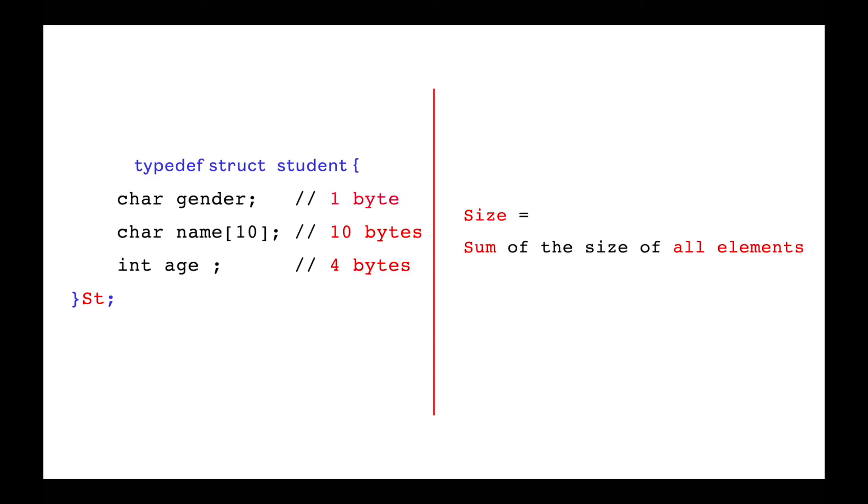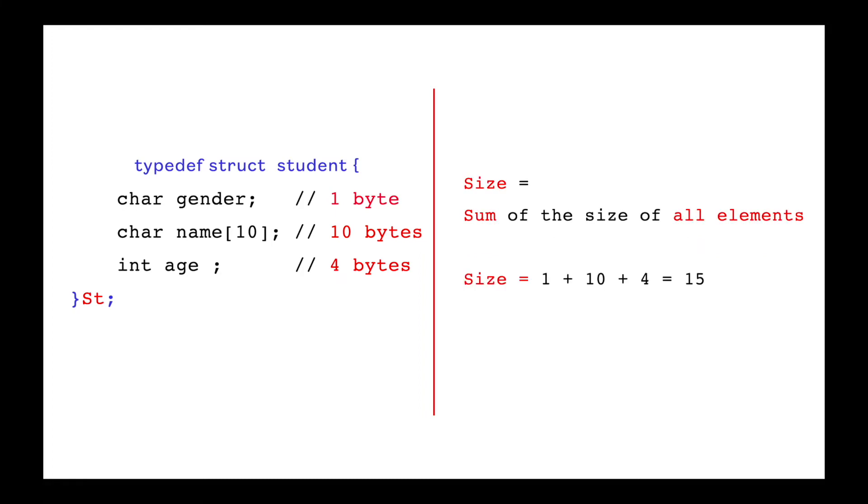Next, see the size of a structure. Size of a structure is the sum of the size of all elements. In this example of student structure, first element gender size is 1 byte, second element name size is 10 bytes, and last element age size is 4 bytes. So as per the statement, its total size should be 15 bytes.